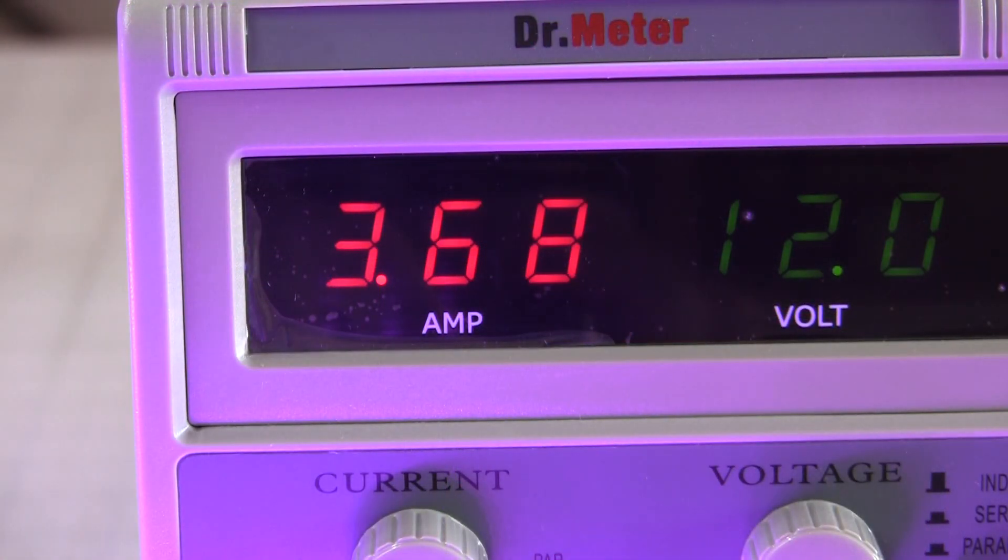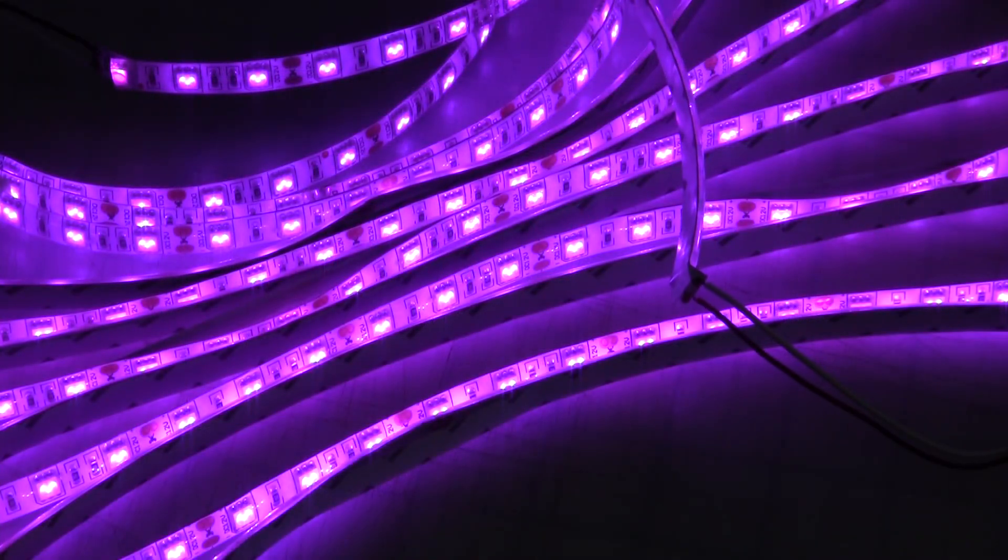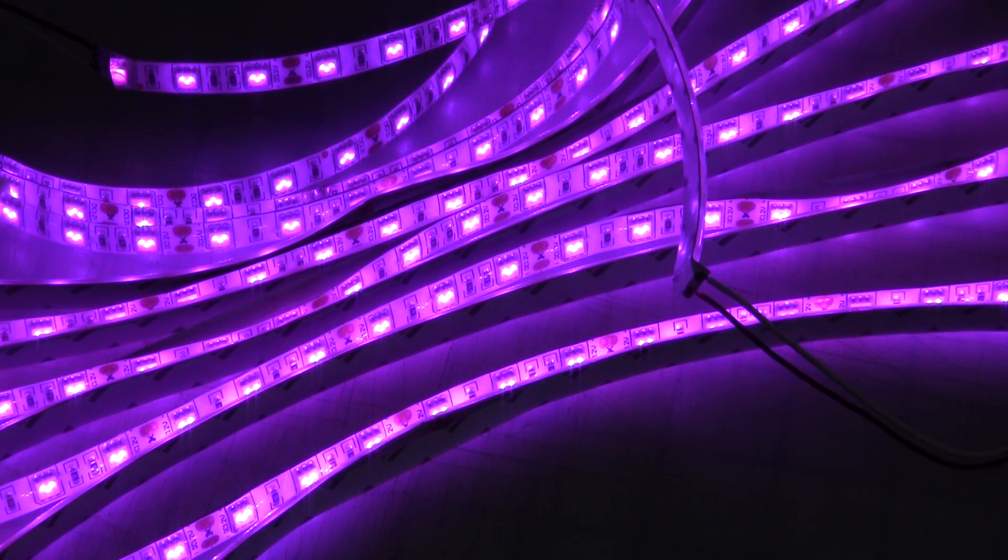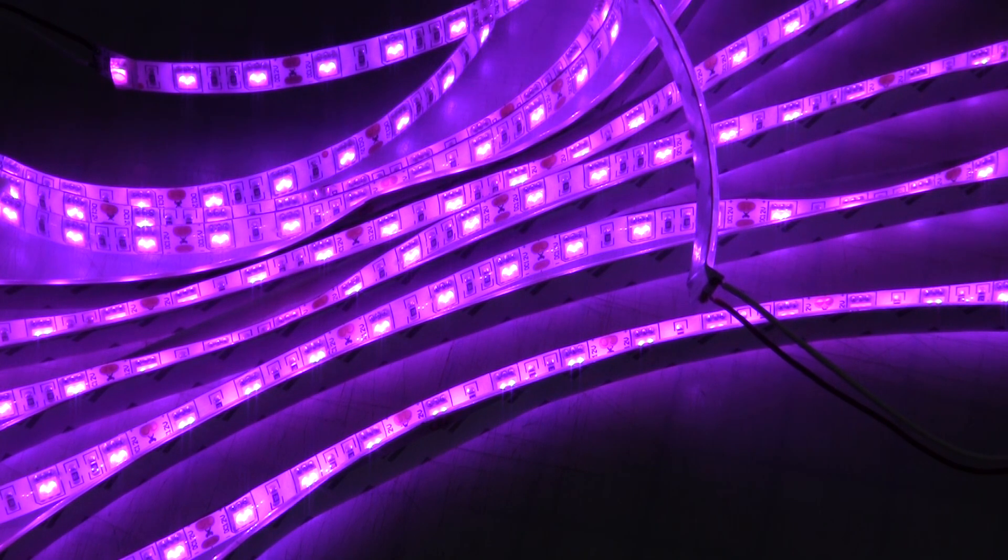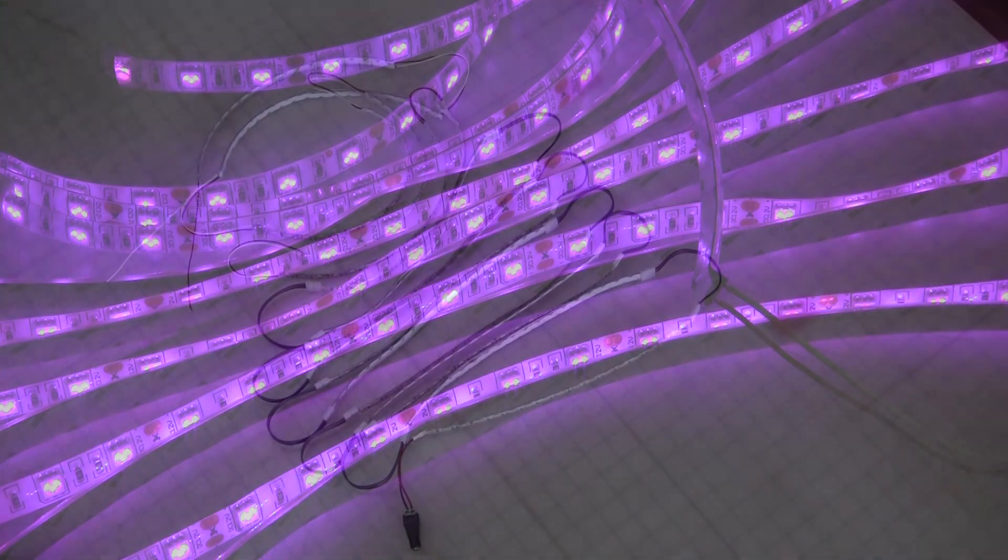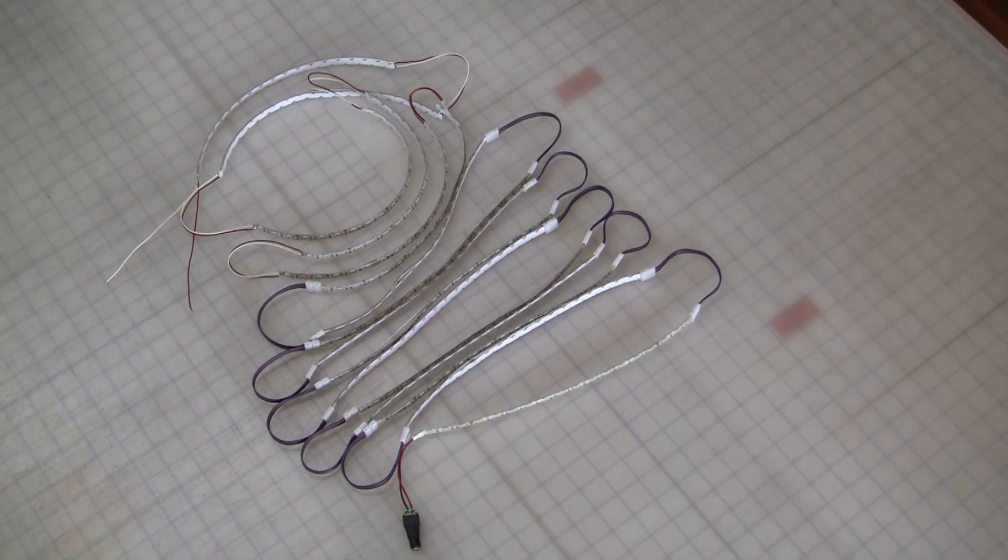But look how much brighter it gets when I connect both ends. Lucky I got lazy and decided to daisy chain the sections together instead of parallel connecting them. On the other hand, the problem is the sections towards the end of the chain will be dimmer than the sections closest to the power. Not a problem for mood lighting, but a disaster for an exposure unit. I'll have to rethink daisy chain wiring in my next version.